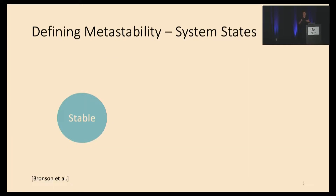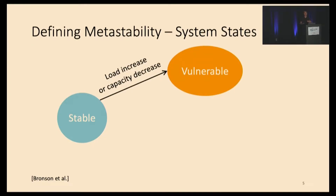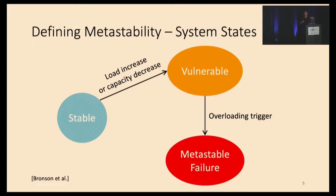Let's consider how to think about metastable failures. Initially, your system is running in a stable state, meaning no matter how large the trigger is, you will never enter metastable failure. However, when there's a load increase or capacity decrease, it can render your system vulnerable. Note that the vulnerable state is not an overload state — there's no issue. In reality, practitioners like to run in the vulnerable state because it has higher utilization and is more cost efficient. However, when in a vulnerable state, a long enough overloading trigger can push the system into a metastable failure state, with a sustaining effect such as retries keeping it stuck even after triggers are removed.